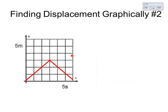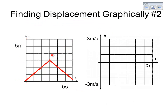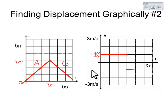Our second situation: we again have a position versus time graph and we're going to draw the velocity versus time graph. We have something that starts at a position of zero meters, and in a total of three seconds it goes up to a position of three meters. Then over the remaining three seconds, it goes back down to a final position of one meter. The slope of region A is one meter per second, so our velocity graph shows a constant flat line at positive one meter per second. For region B, it's going down one meter every second, so the velocity is negative one meter per second.